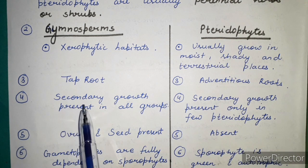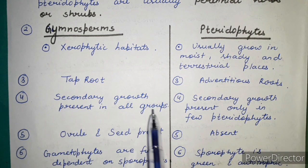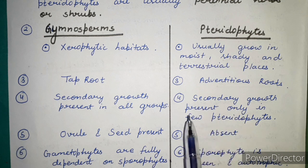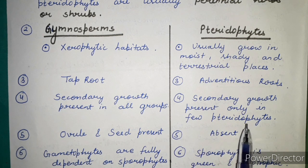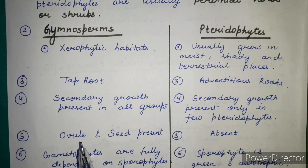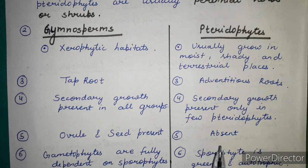Secondary growth is present in all gymnosperm groups; however, it is present in only a few pteridophytes. Ovule and seed are present in gymnosperms, whereas ovule and seed are absent in pteridophytes.